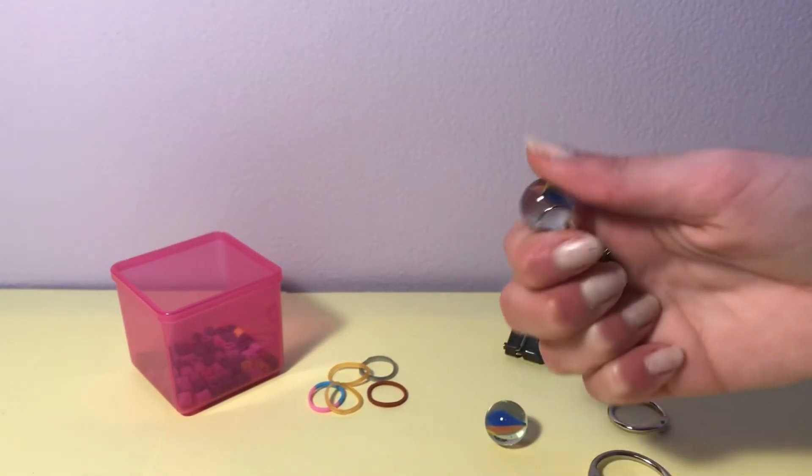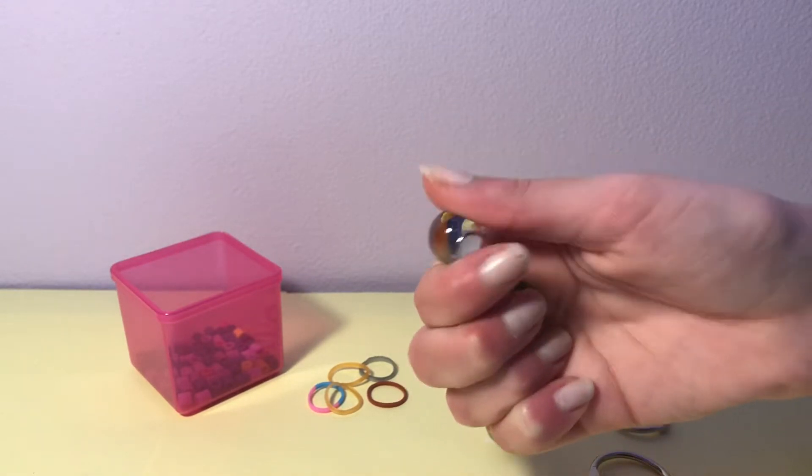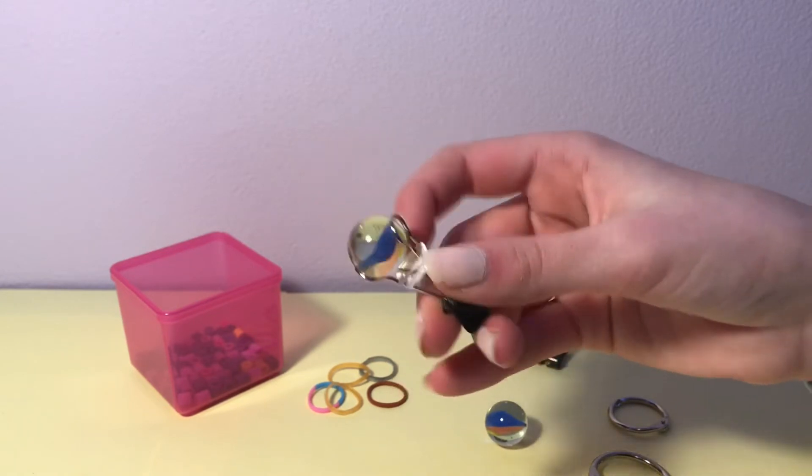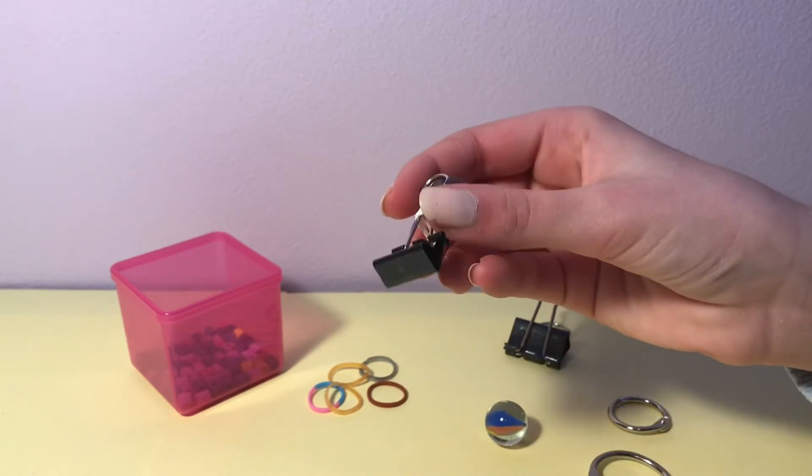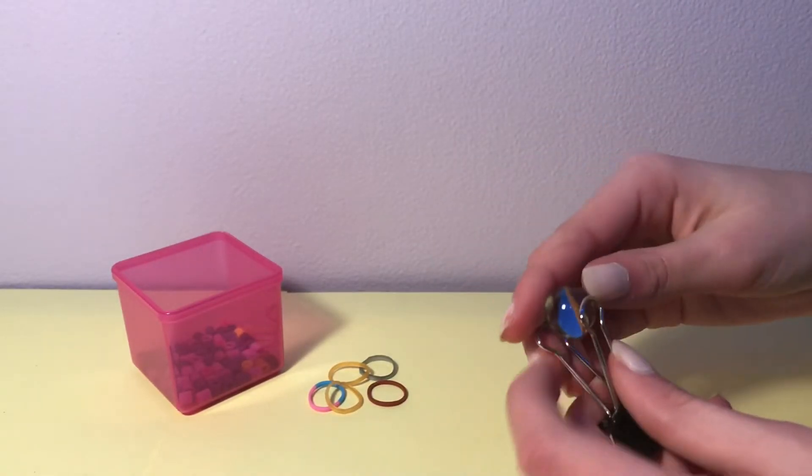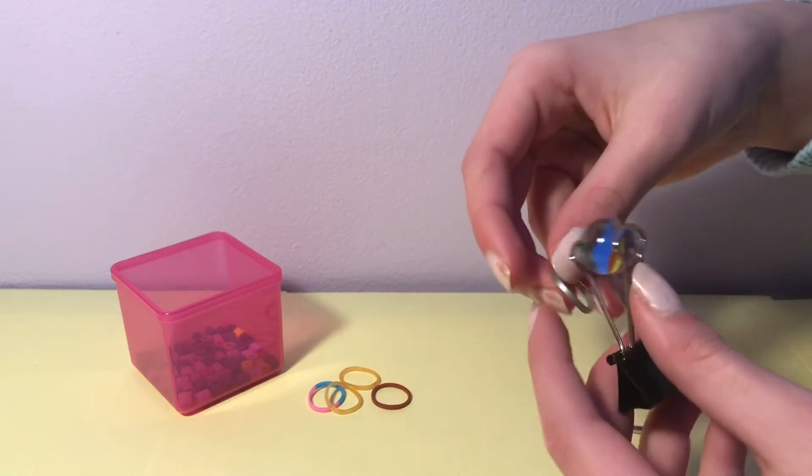This little fidget is super fun, and it's really easy to make because you probably already have these supplies around your house. And it's really fun to play with, and you can always put stickers on the black part if you want. Once again, these really do work with any size of binder clip, as long as you put the rubber band around it tight enough.